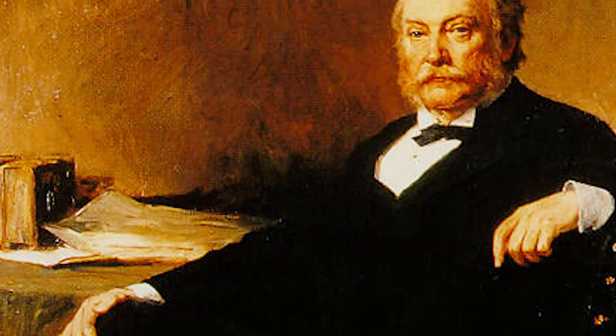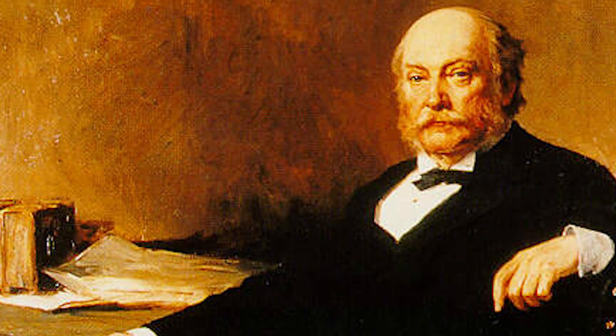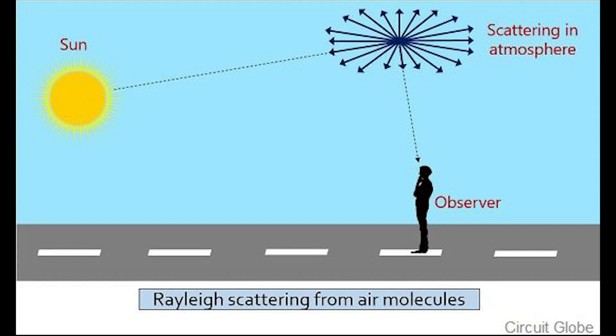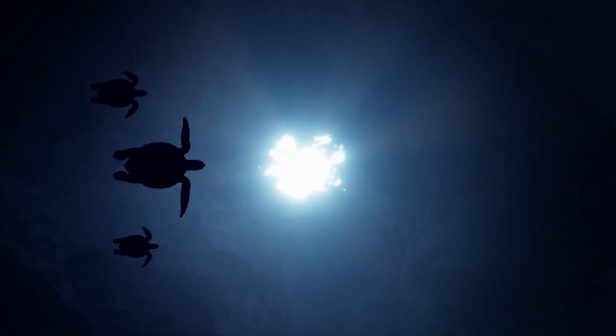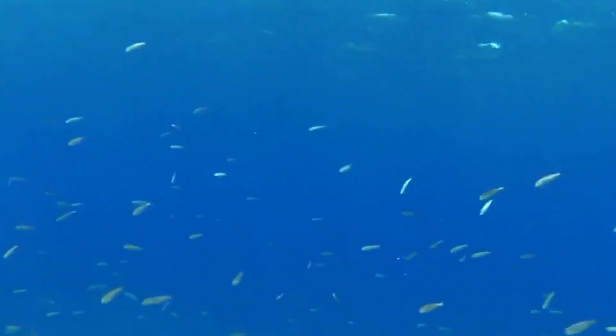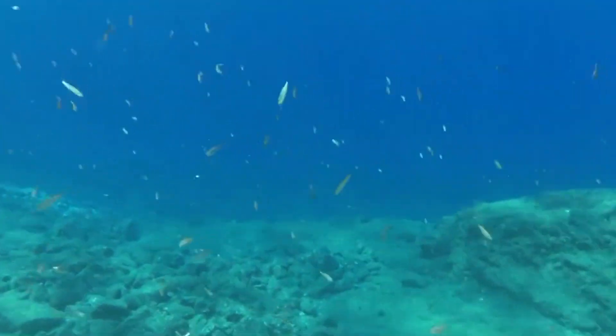Lord Rayleigh, whose full name was John William Strutt, was a British physicist and mathematician who made many vital contributions to science, mainly in the areas of optics and electromagnetism. Rayleigh was the first to provide an explanation for why the sky appears blue, a phenomenon now known as Rayleigh scattering. He also studied the behavior of light as it passes through a range of materials, including water, and his work helped to establish the scientific foundation for our understanding of how daylight penetrates into the ocean.